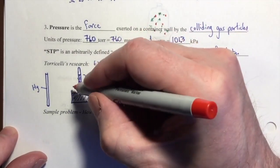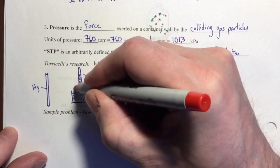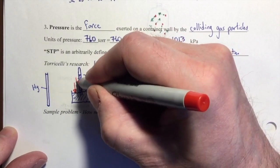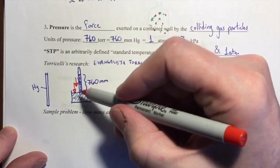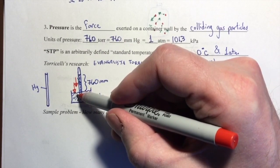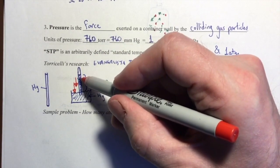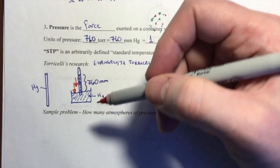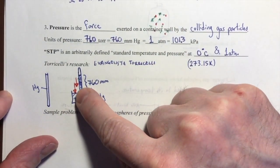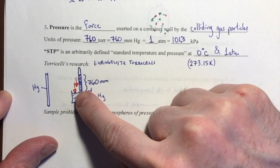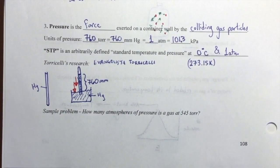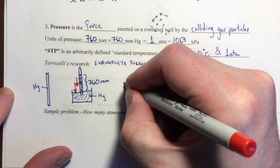He said, the only force that I can think of is that there must be a force that's pushing down on the surface of this liquid that is preventing it from rising, and that's preventing this mercury from draining out. As he thought about it, he said, I think the force that is being exerted downward on the surface of that mercury is the force of all the atmospheric gases.